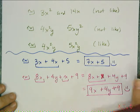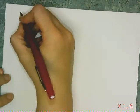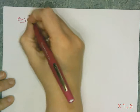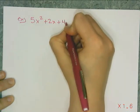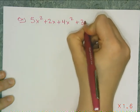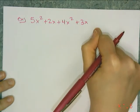So let's look at another example. And this one is another one that you want to try on your own. So pause it after I write the example and try it. So this one, 5x squared plus 2x plus 4x squared plus 3x. Okay, so pause here and try it.